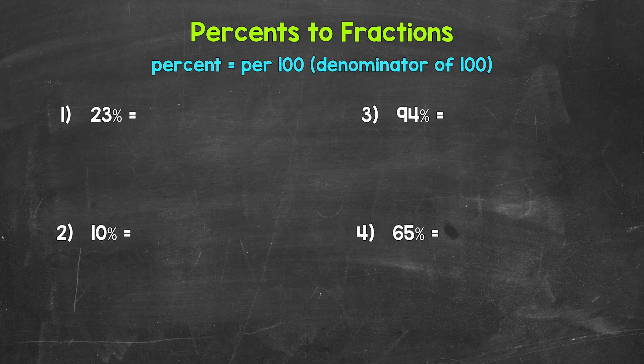Remember, percent means per 100. So we can think of this as 'for each 100' or 'out of 100.' All we need to do to go from a percent to a fraction is to take away the percent symbol and rewrite whatever we have with a denominator of 100 — put it over 100.